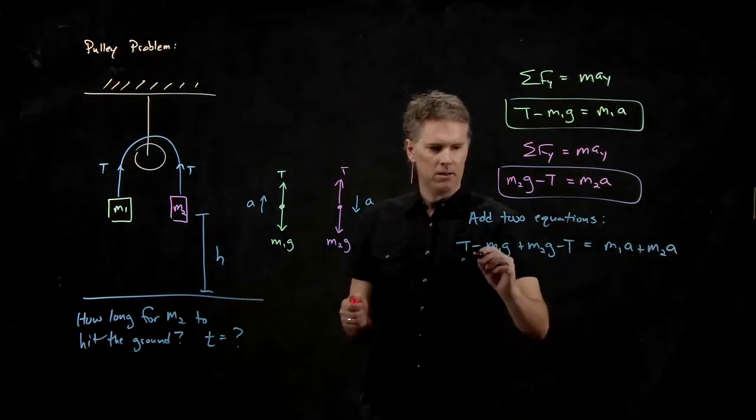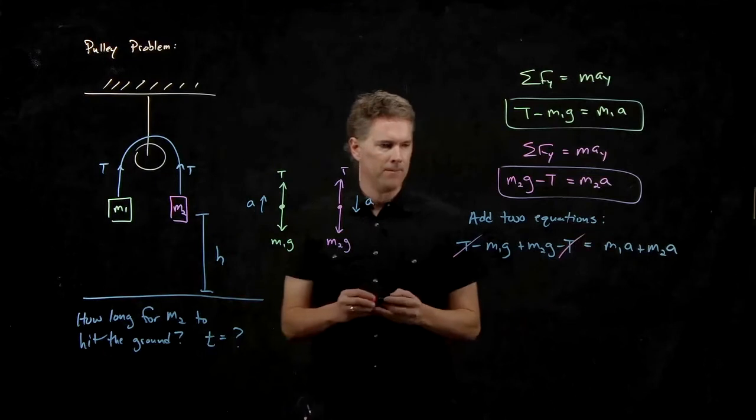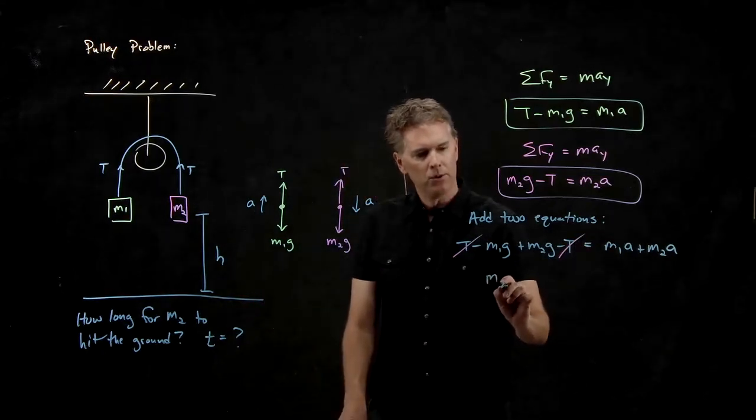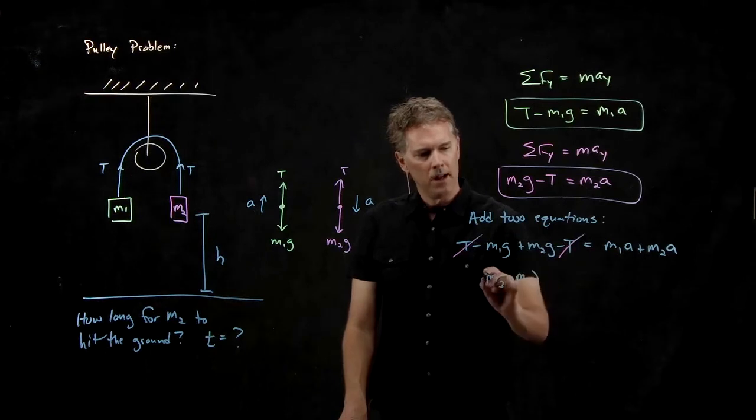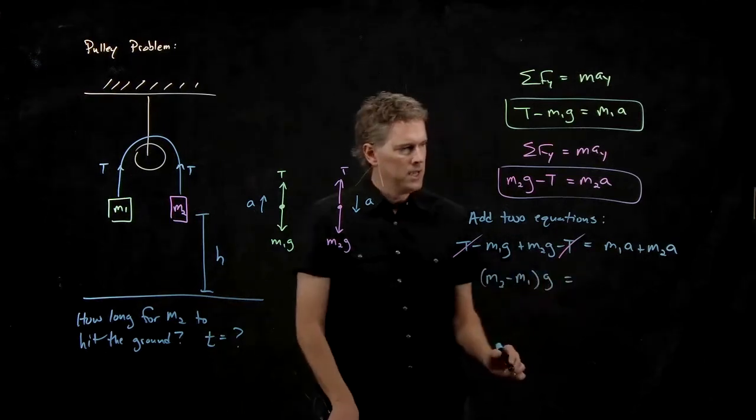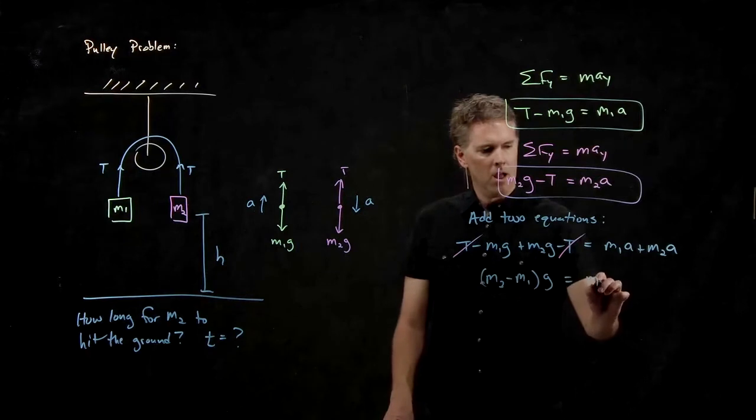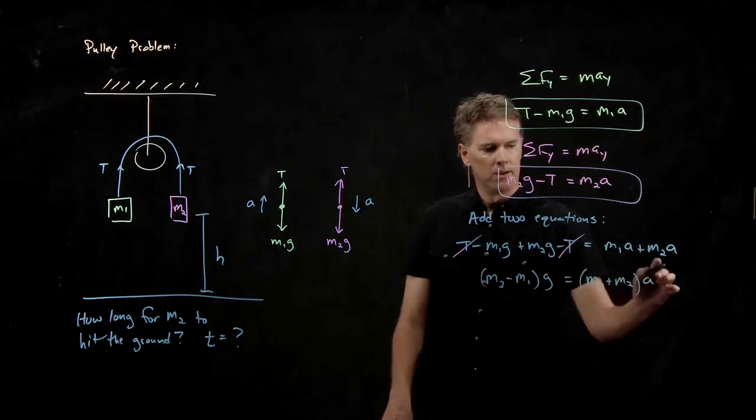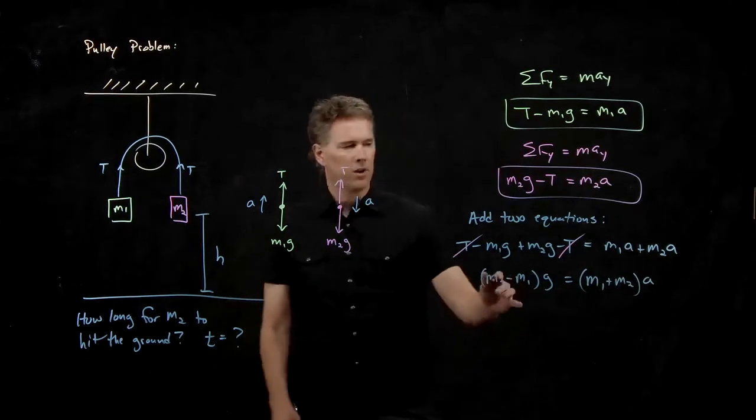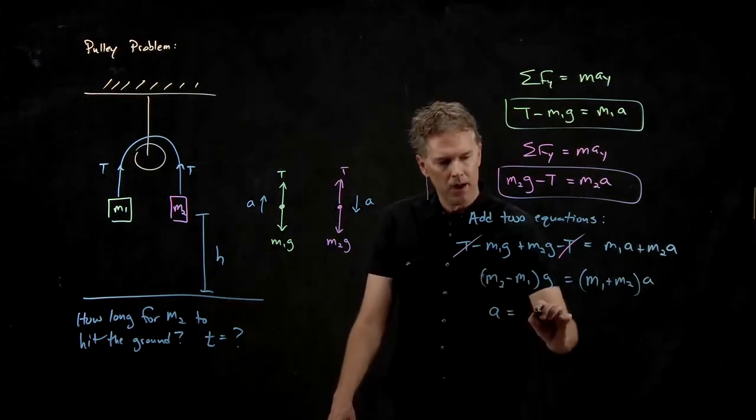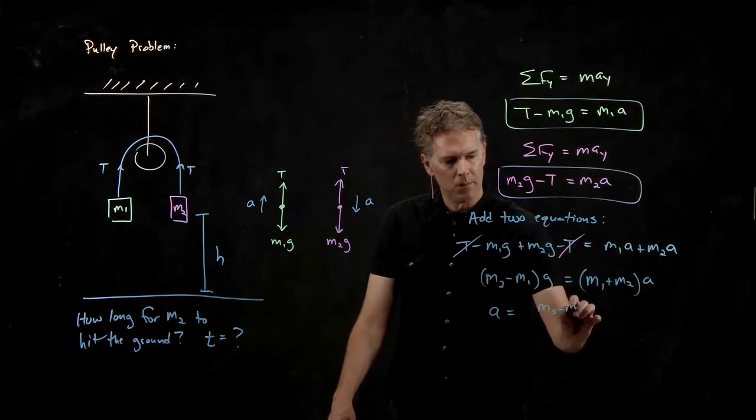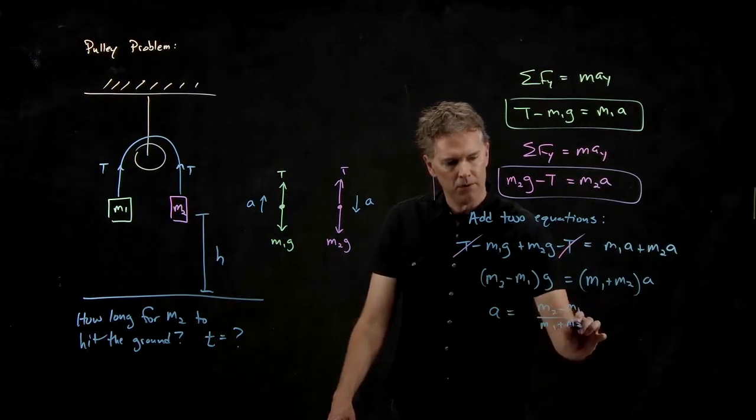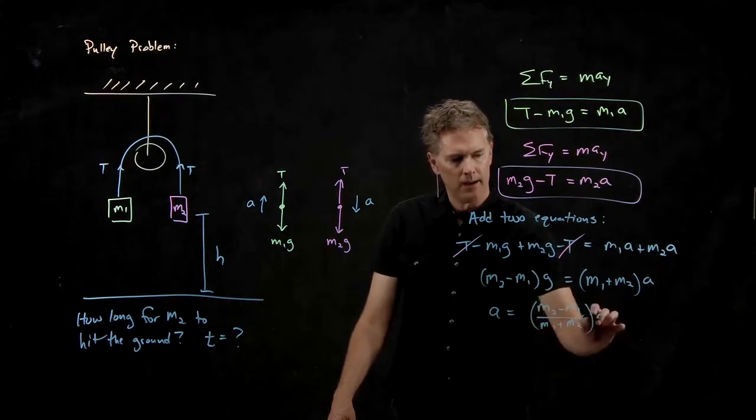The T there drops out with the T there. And so we get M2 minus M1 times G equals M1 plus M2 times A. And now we can solve this for A. A is equal to M2 minus M1 over M1 plus M2, all of that times G.